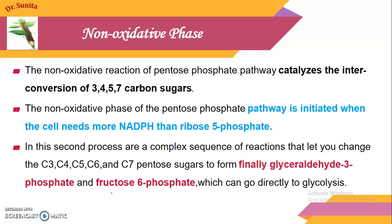The non-oxidative phase of the pentose phosphate pathway is initiated when the cell needs more NADPH compared to ribose-5-phosphate. In that case, the non-oxidative pathway is initiated; otherwise, the oxidative pathway alone is sufficient.